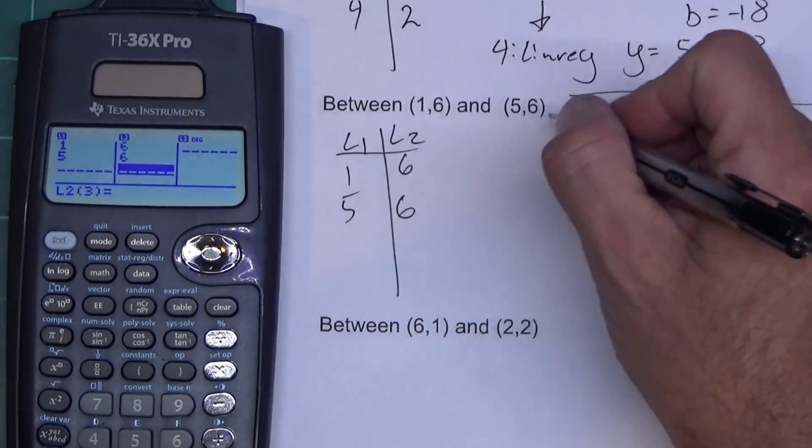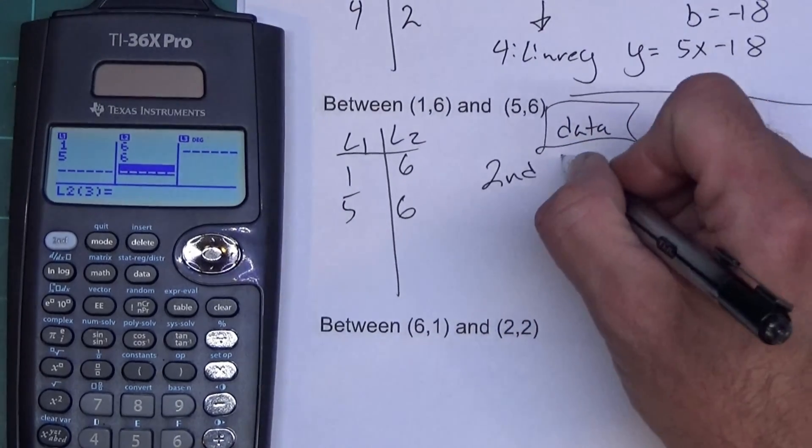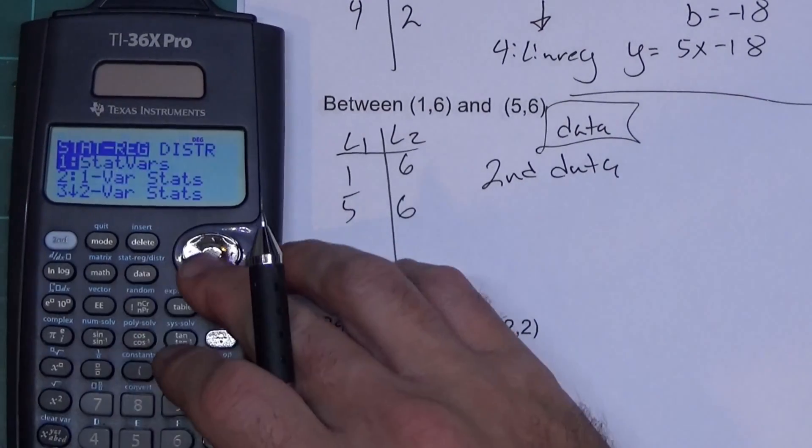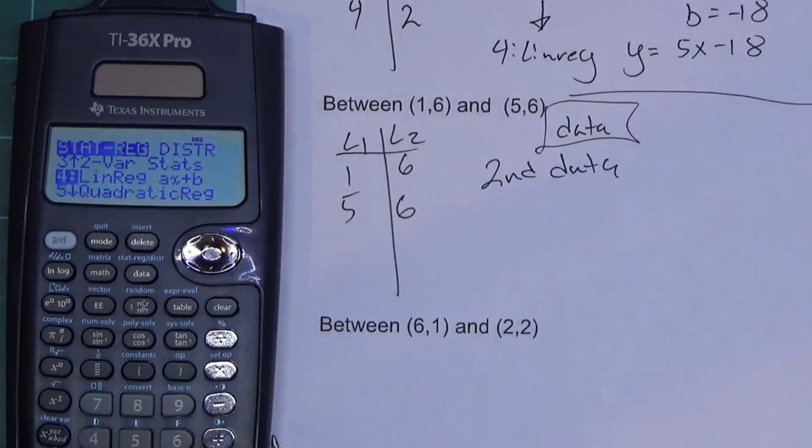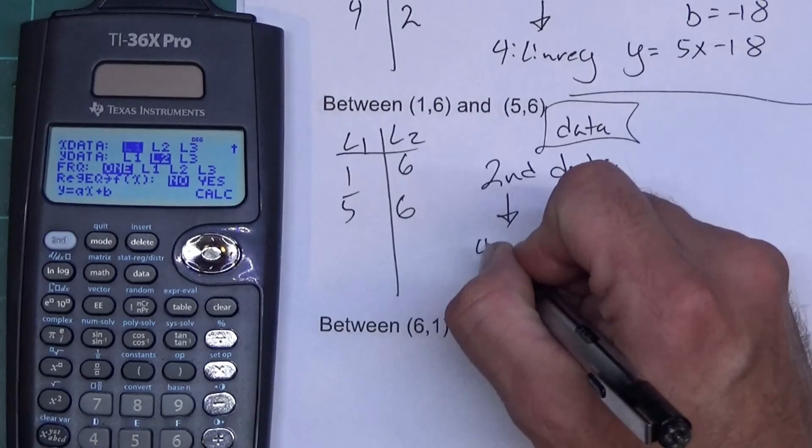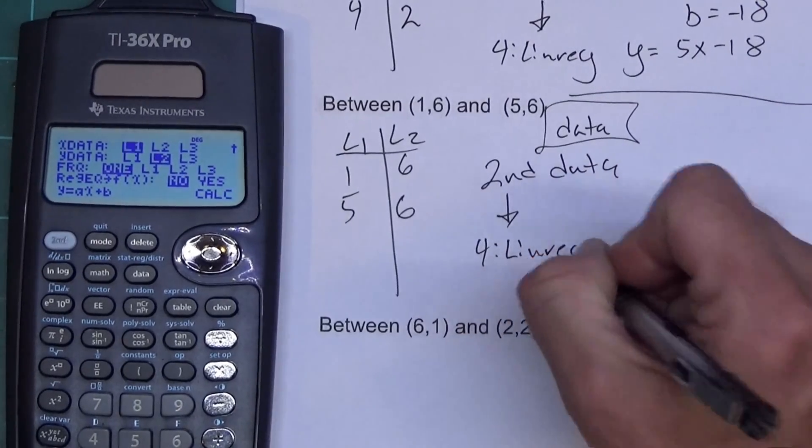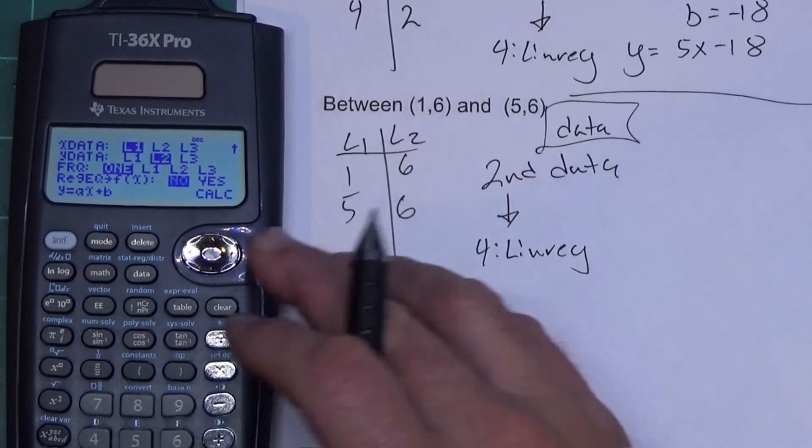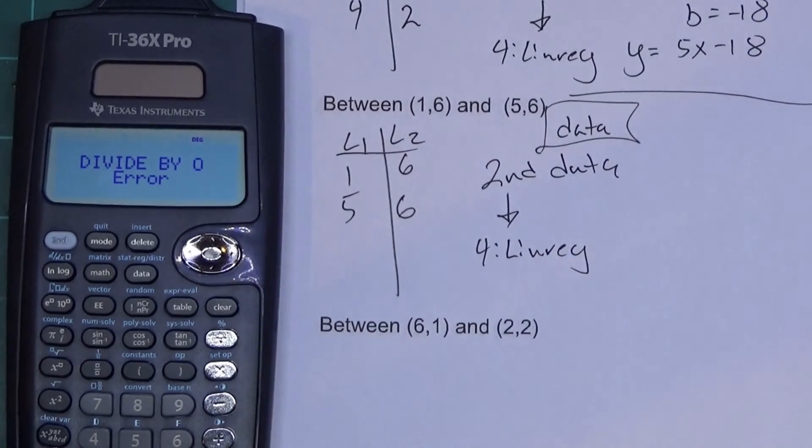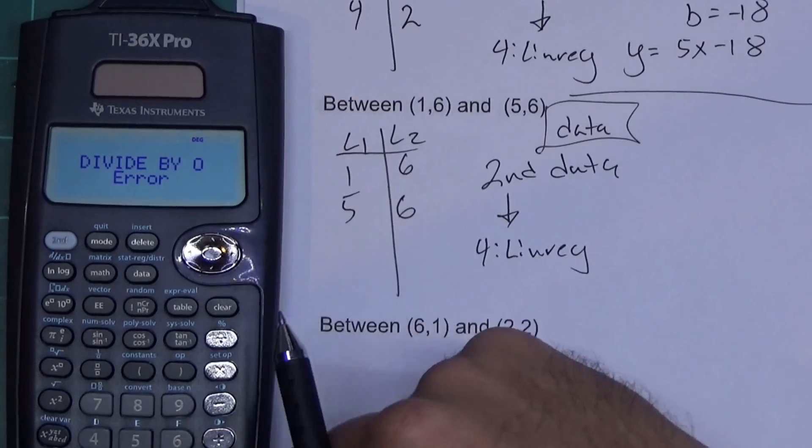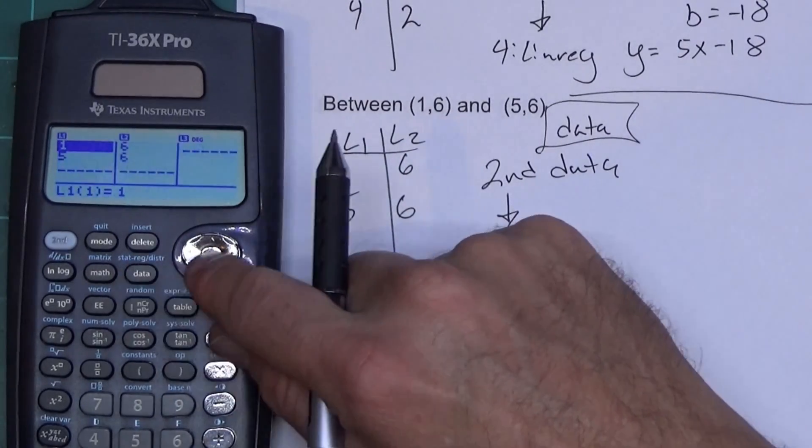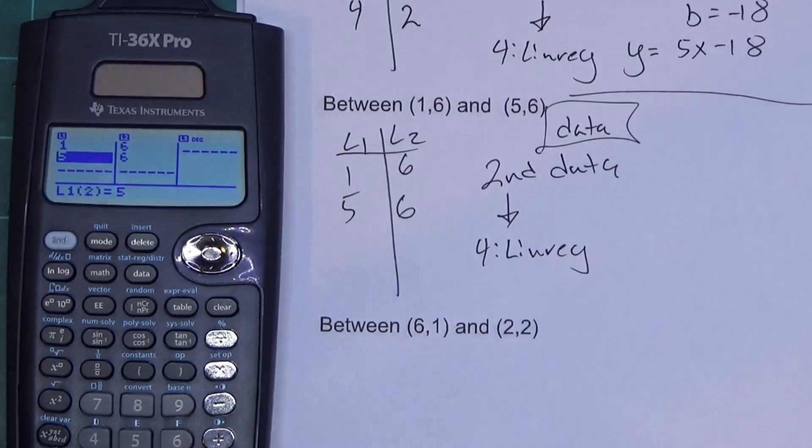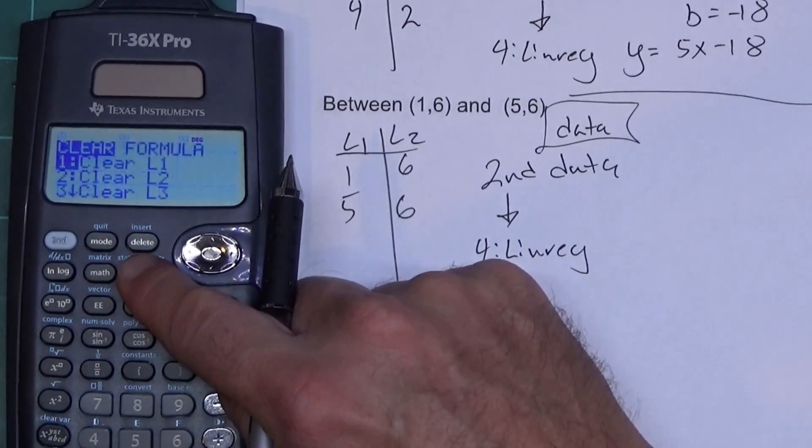Then I'm going to press second data. Again, second data. We're going to go down to number 4 for linrag. Okay. This time I'm not going to store the regression equation. I'm going to leave it on no because I'm not going to use the table. I'm going to hit calculate. Now it says divide by 0. Okay. That shouldn't have done that. Maybe I did something backwards. Let me hit my data button. Let's hit clear, hit data. Data. So 1 and 5, 6 and 6. I didn't do that backwards. And I just saw something again. Ooh.